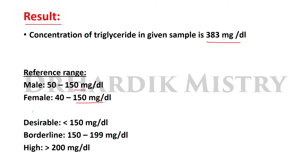Desirable values are less than 150 mg/dL for both males and females. Values between 150 and 199 mg/dL are considered borderline. Values above 200 mg/dL are considered high. Our value of 383 mg/dL is above the normal range, indicating a condition of hypertriglyceridemia.